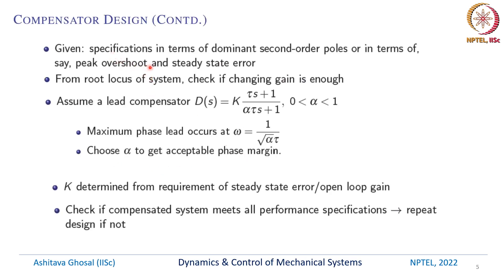The specifications normally given are in terms of dominant second-order poles, or in terms of peak overshoot and steady state error. We would like the control system to achieve certain transient response and certain steady state error response. From the root locus we can first check if changing the gain is enough to ensure that the root locus passes through the desired dominant second-order poles. As we change the gains, the root locus will pass through certain points in the s-plane and we can check whether it passes through the desired dominant poles. Most of the time this is not enough.